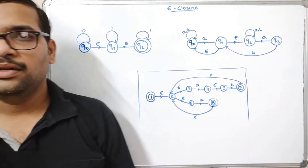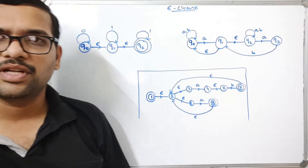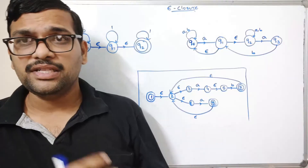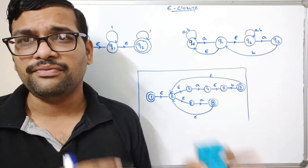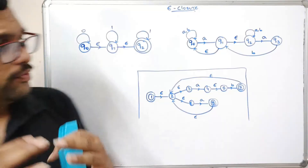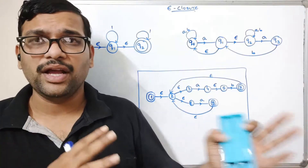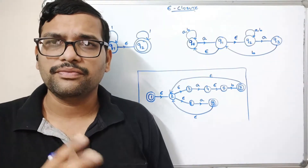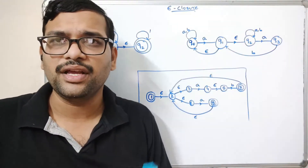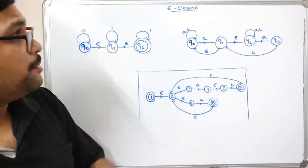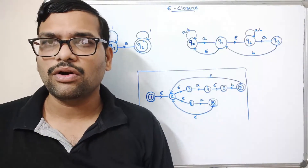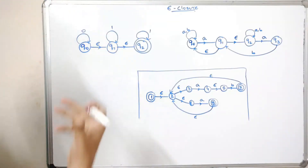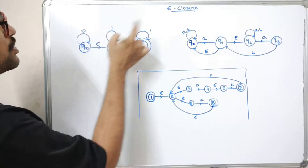Welcome back to our channel. Today's session will discuss epsilon closure in automata theory. In the previous session we discussed NFA and NFA with epsilon, and we saw that NFA with epsilon is not practically feasible, so we have to convert NFA to DFA. For that purpose we need to find the epsilon closure.